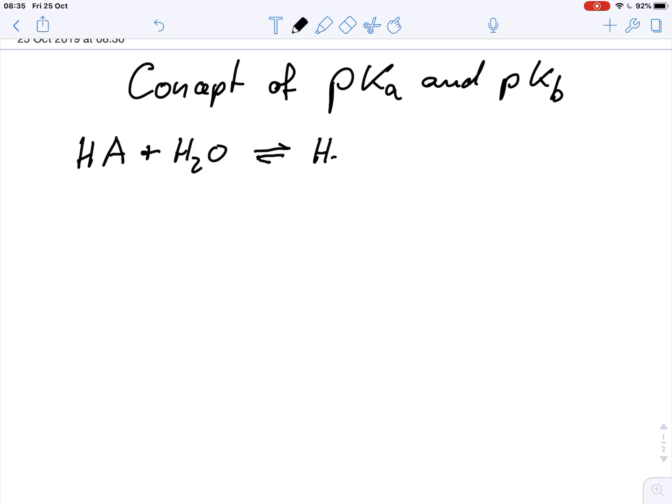So we would get H3O+ plus A-. Obviously HA is the acid and A- would be the conjugate base.